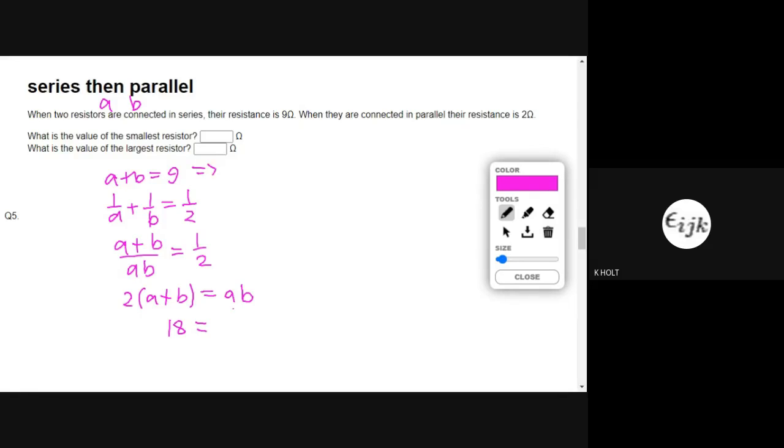And I'm just going to substitute for A, so I get 9B minus B squared. So getting everything onto one side, B squared minus 9B plus 18 equals 0.